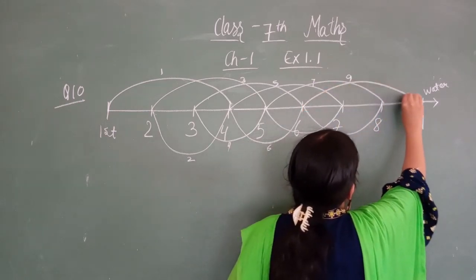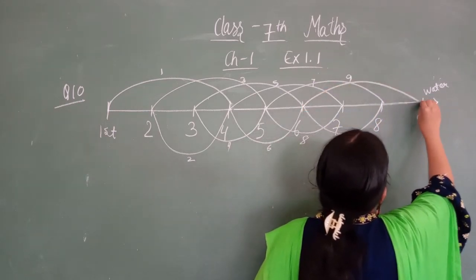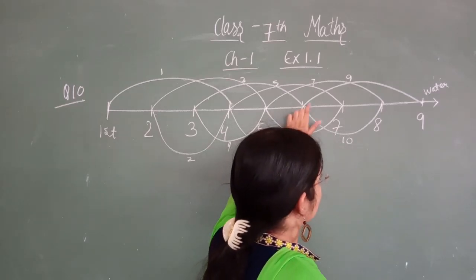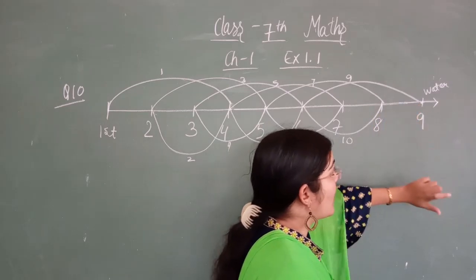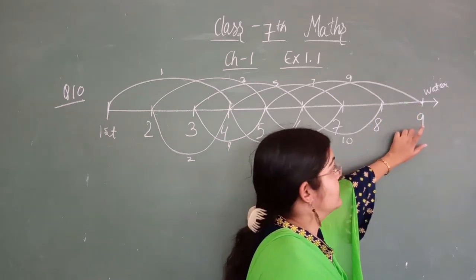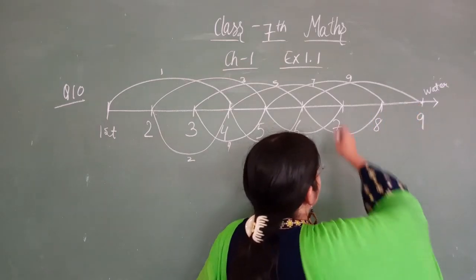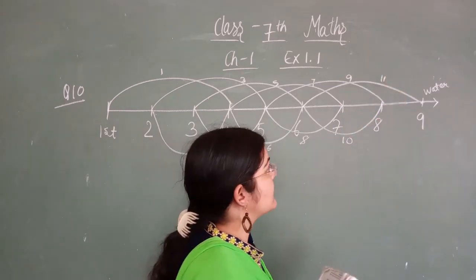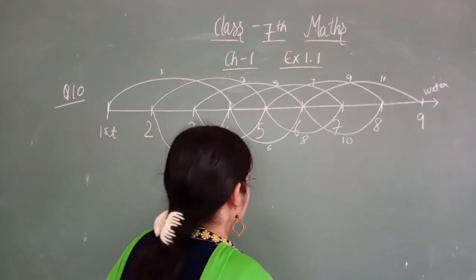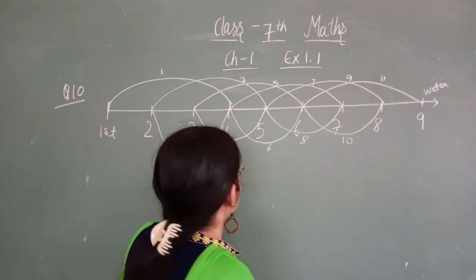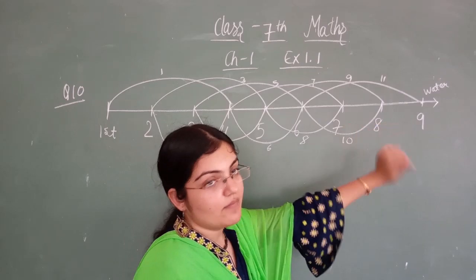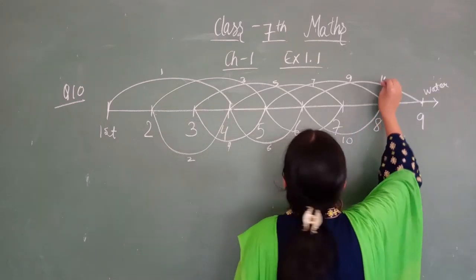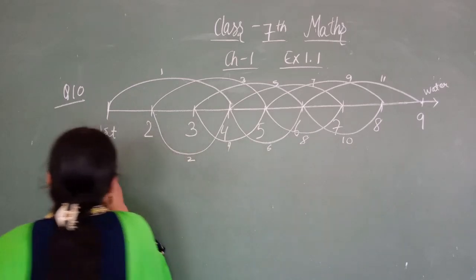From here, three steps down. When the monkey jumps three steps down, the monkey is now at the ninth step — so this is the eleventh jump. This is the monkey's eleventh jump. The question asks in how many jumps the monkey reached the water level — total eleven jumps.